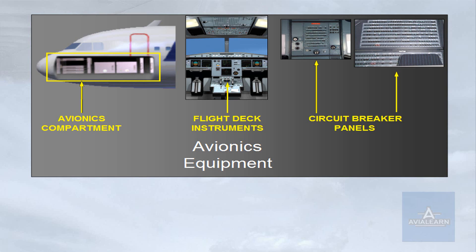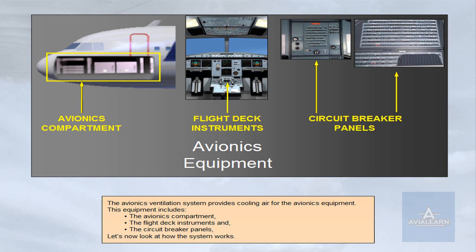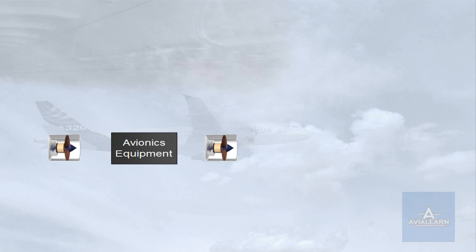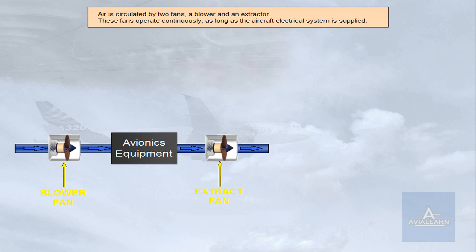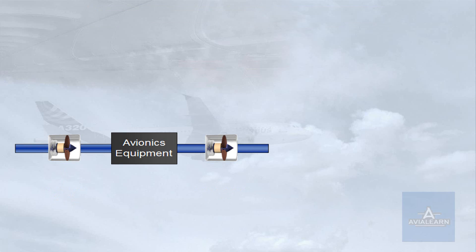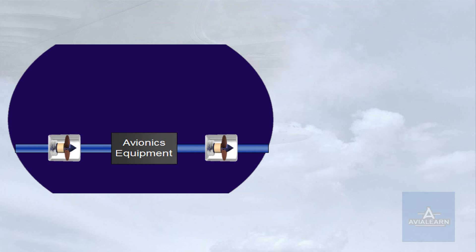Let's now look at how the system works. Air is circulated by two fans: a blower and an extractor. These fans operate continuously as long as the aircraft electrical system is supplied. On the ground, provided that the skin temperature is above a specified value, air is taken from outside the aircraft via a skin air inlet valve.